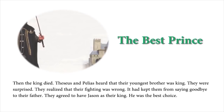Theseus and Peleus heard that their youngest brother was king. They were surprised. They realized that their fighting was wrong. It had kept them from saying goodbye to their father. They agreed to have Jason as their king. He was the best choice.